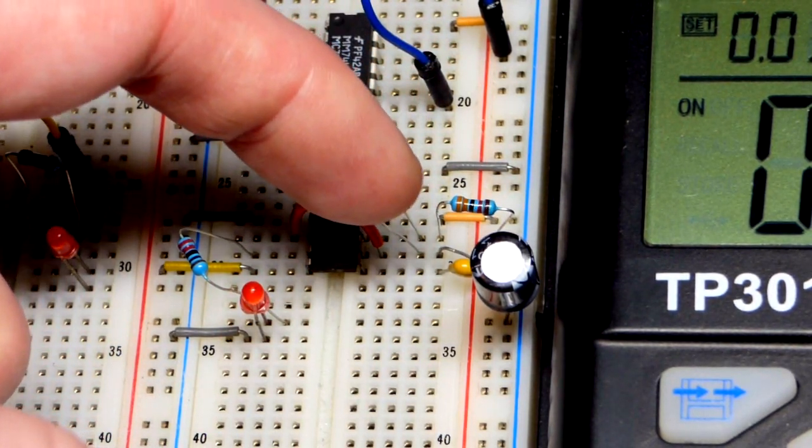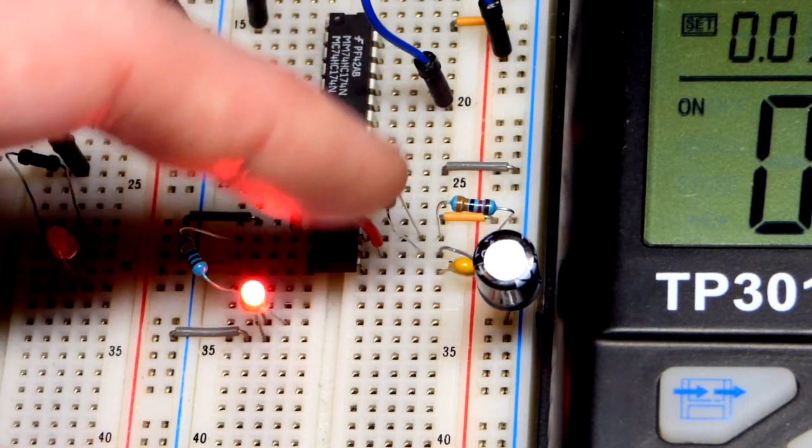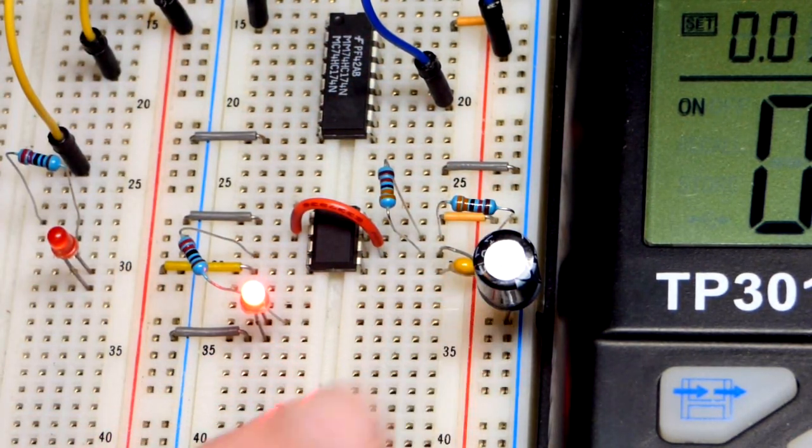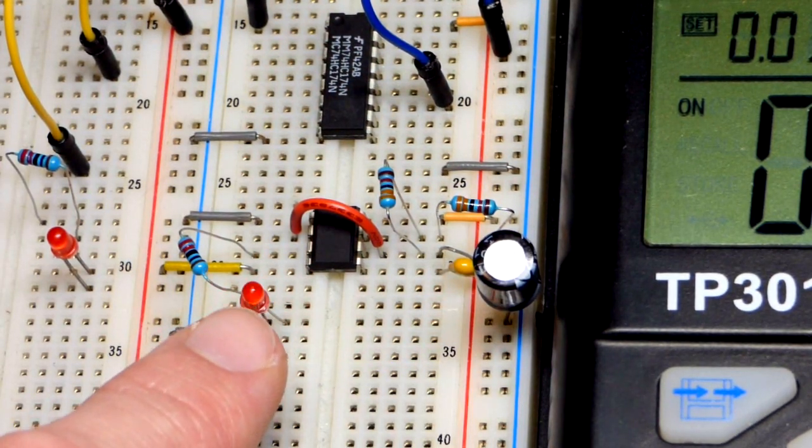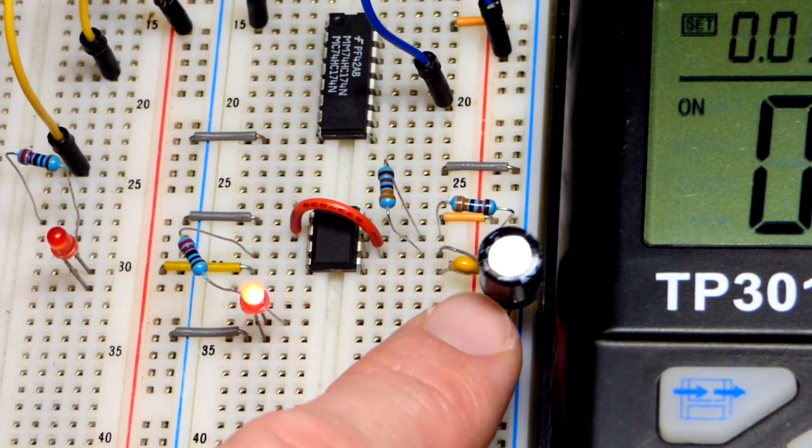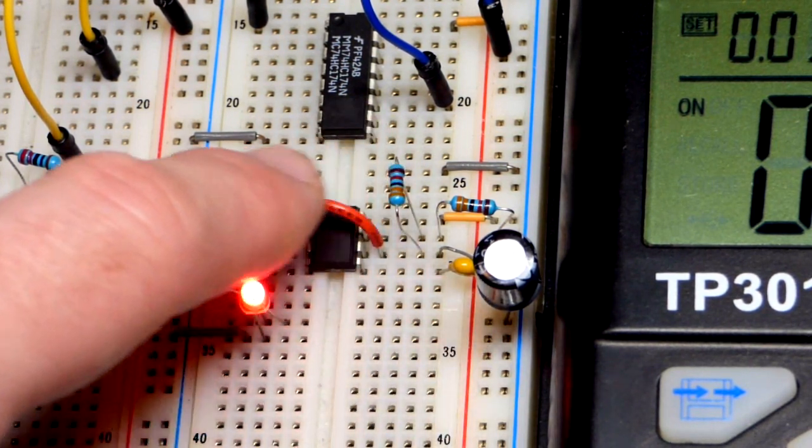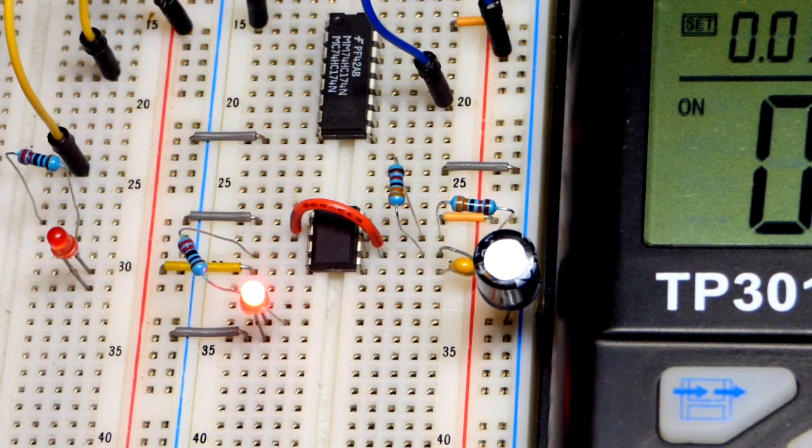That 33,000 ohm resistor sets how long it takes the capacitor to charge. Once it's charged to two-thirds power supply voltage, output goes low, discharge pin goes low. It discharges through that 33,000 ohm resistor, which is why it takes twice as long to charge.